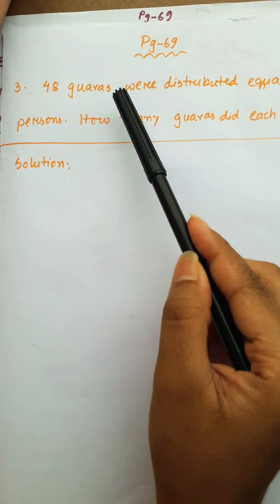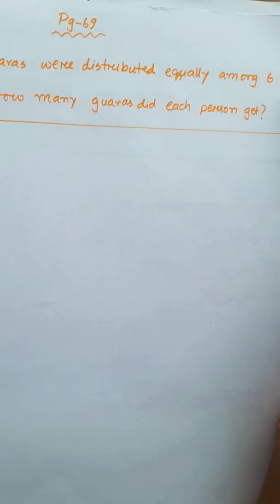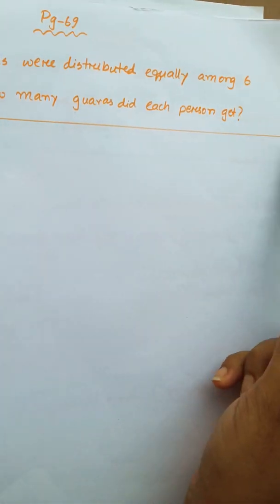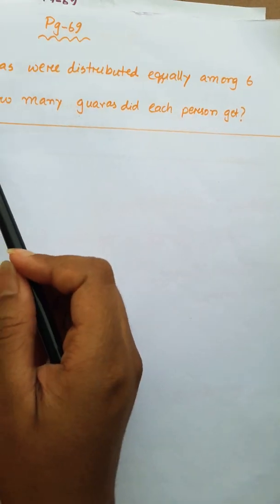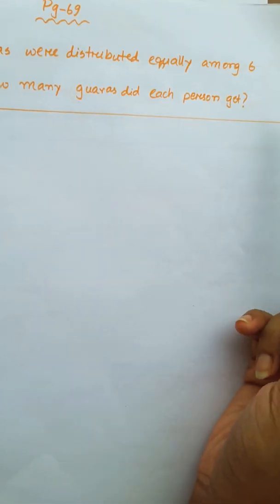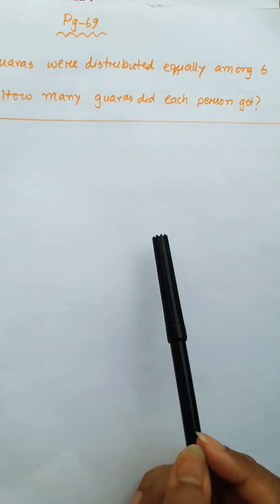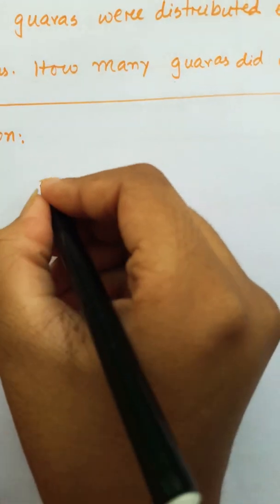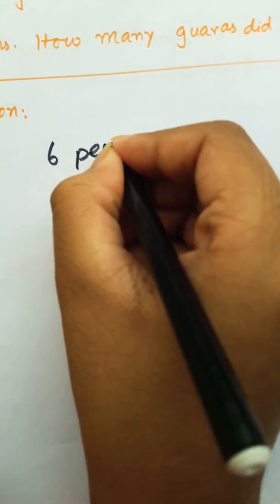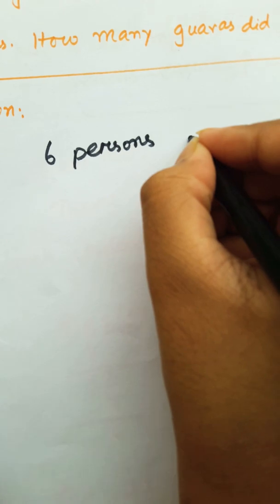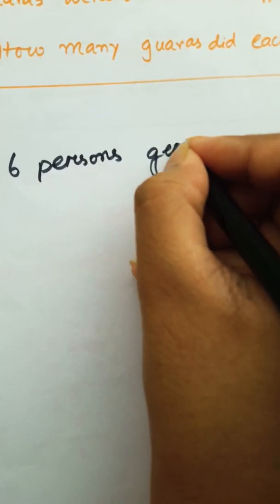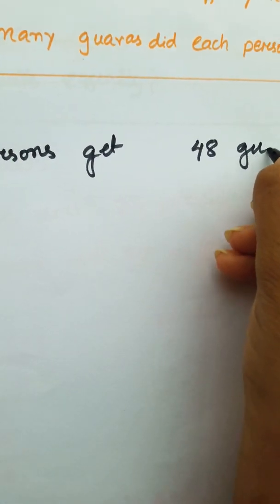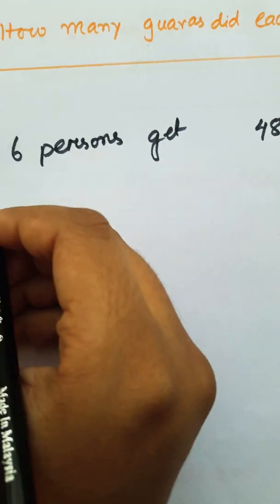48 guavas were distributed equally among 6 persons. How many guavas did each person get? 6 persons get 48 guavas.